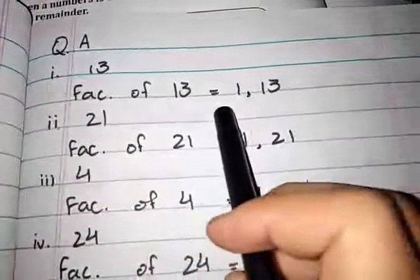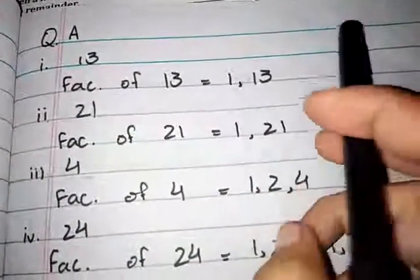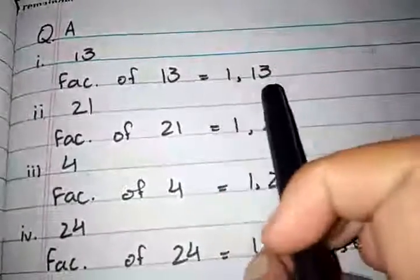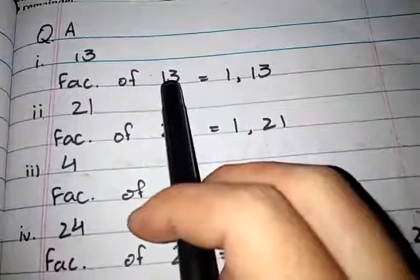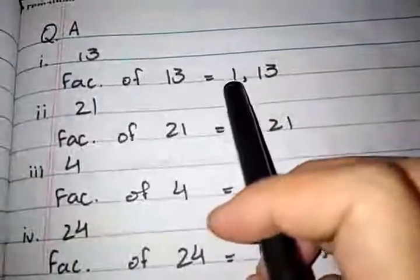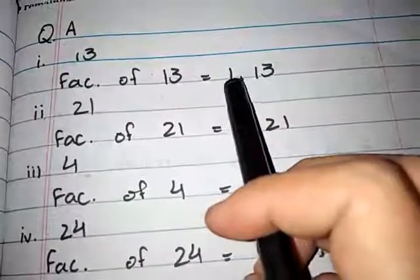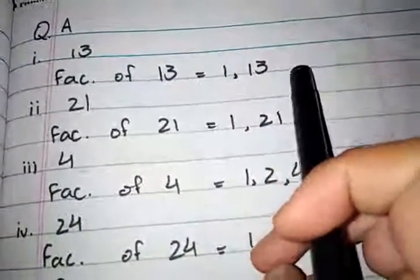Factors of 13 are 1 and 13. Thirteen has only two factors because 13 is a prime number.